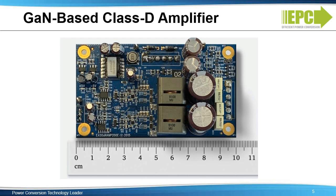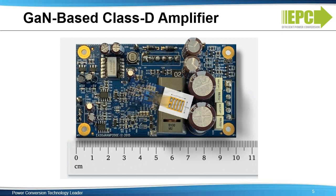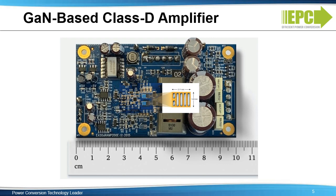Shown here is a GaN transistor-based Class D amplifier capable of 200 watts driving an 8 ohm speaker, or 400 watts into a 4 ohm speaker. It is configured as a bridge-tied load with a PWM frequency of 364 kHz. This amplifier uses the 100 volt rated 16 milli-ohm EPC 2016C GaN transistor with an LMG1205 driver IC from Texas Instruments as the half bridge gate driver. A close-up of the extremely small 10 mm by 15 mm power stage of the amplifier with eGaN FETs is shown.